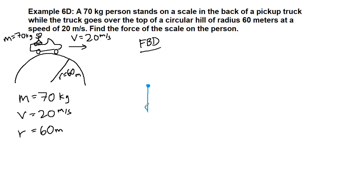For this person, all they have acting on them is gravity down. So gravity is MG, 70 times 9.8, which is equal to 686 newtons. And then the normal force up is the scale.